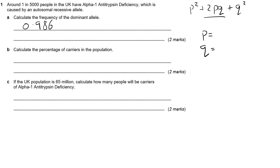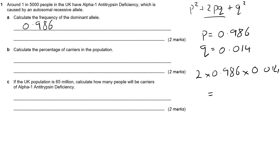I rounded off to three decimal places in my original calculation, so I'm going to do the same thing with my value for Q, which means I've got 0.0114. And up there for P, we've got 0.986. That's simply 2 times 0.986 times 0.0114. Punch that into a calculator and it gives us a value of 0.027608. Rounding to three decimal places, it becomes 0.028.